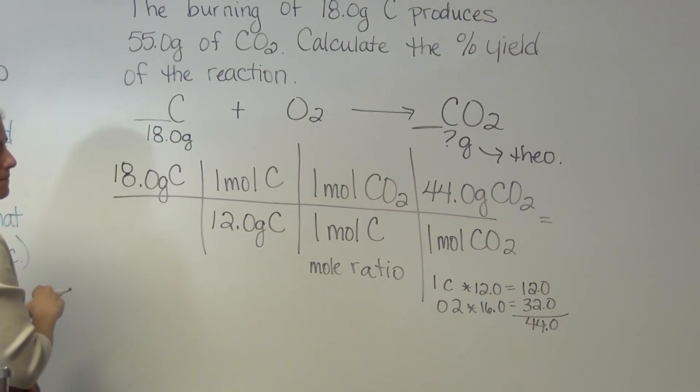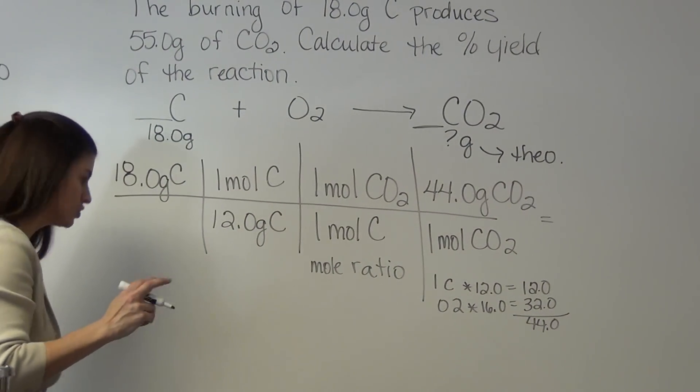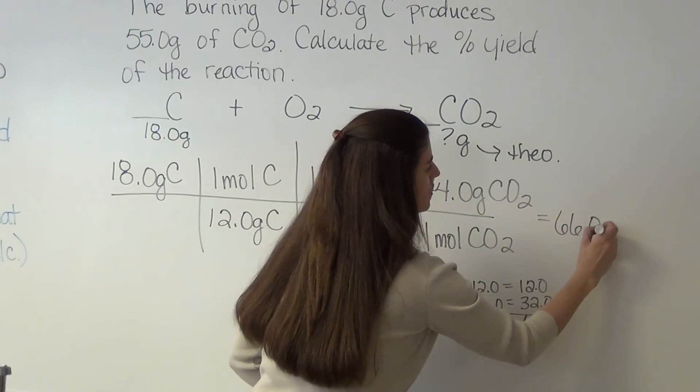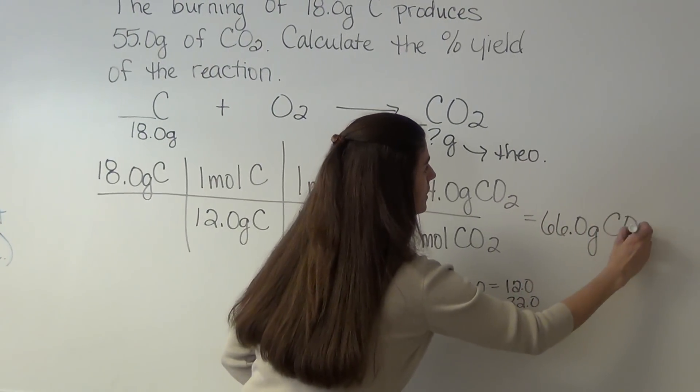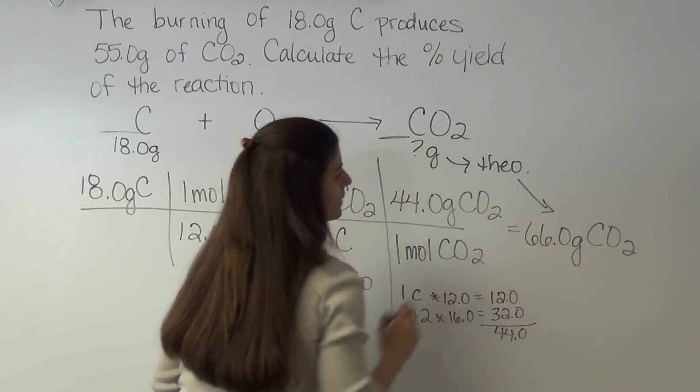Multiply everything on the top, divide by the bottom, and you should get 66.0 grams of CO2. This is the theoretical mass.